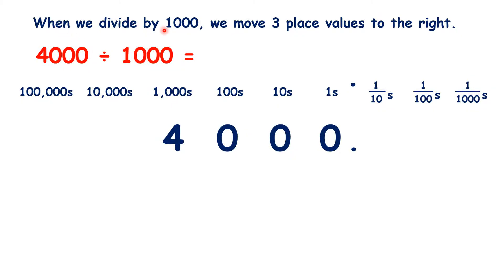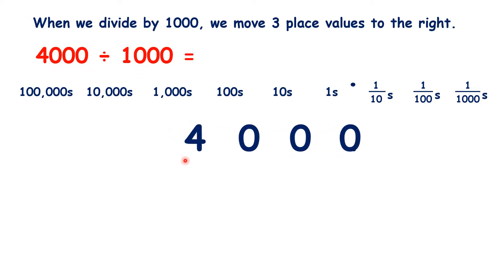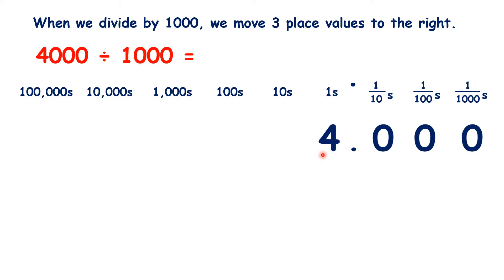When we divide by 1,000, we move the digits three place values to the right. So if we have 4,000 divided by 1,000, we move the digits three places to the right, and we get 4.000.